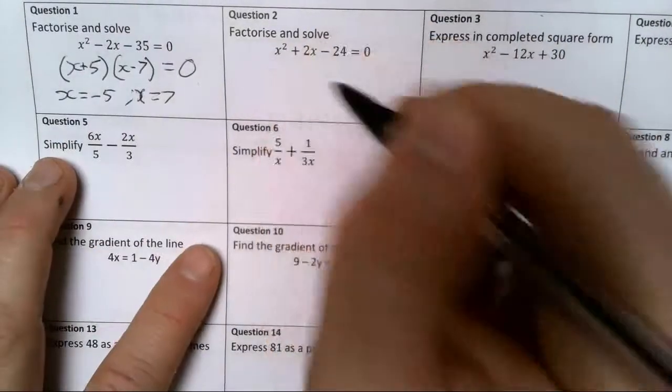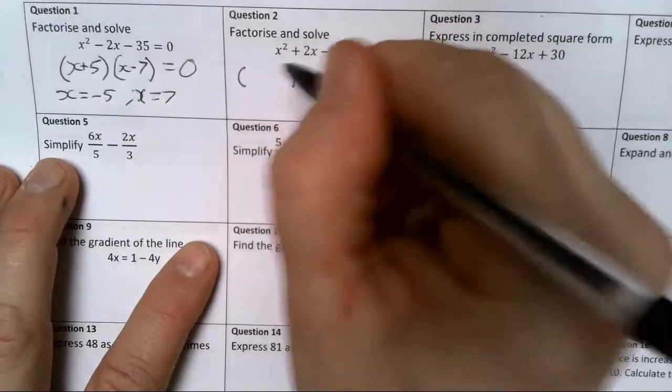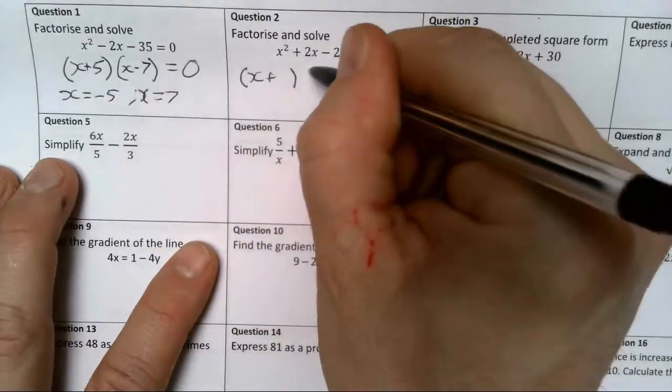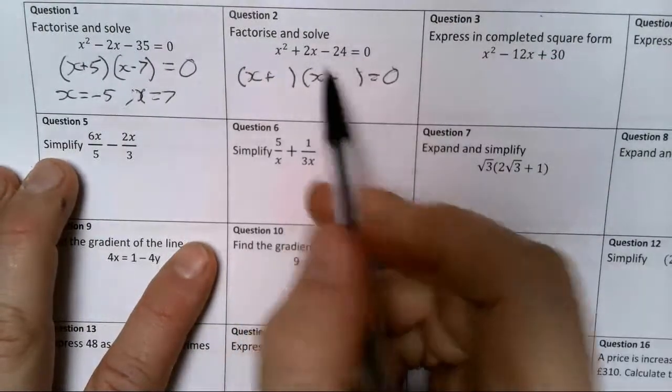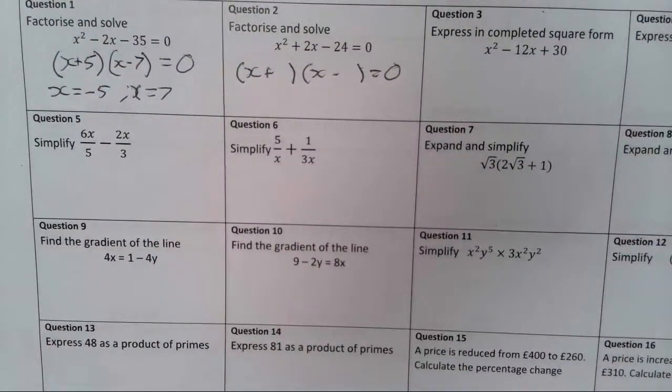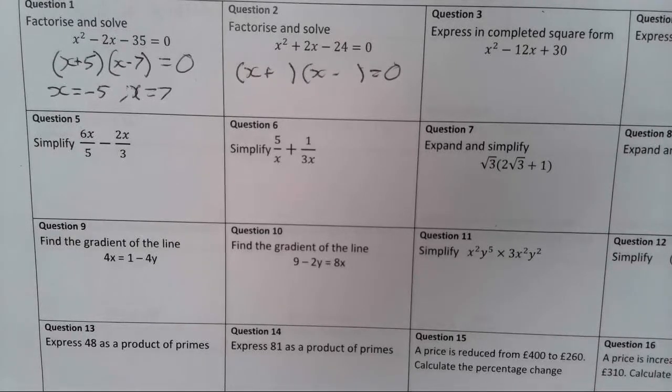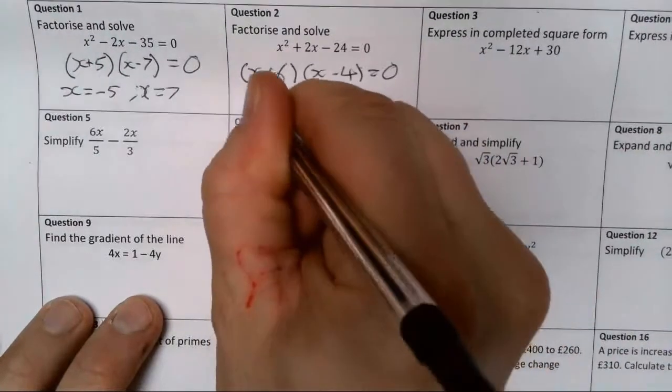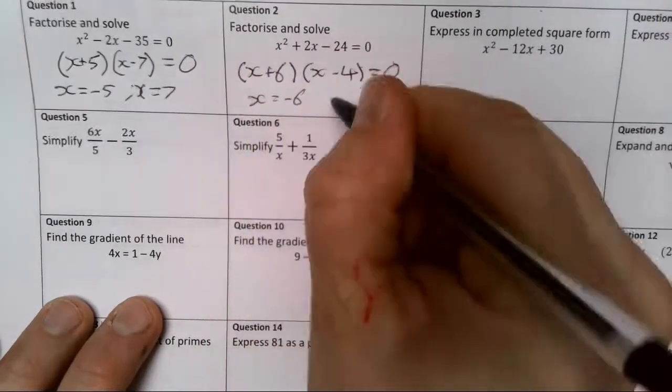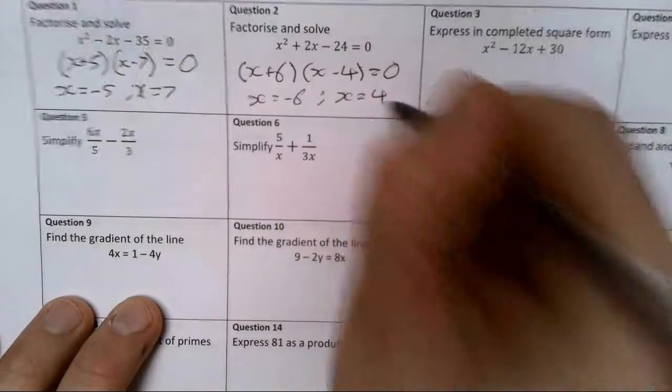Same thing here. I'm going to need to have x plus and x minus to generate this minus 24. I'm thinking about factors of 24, so I'm just going through them in my head. I'm thinking about 12 and 2, clearly not. I'm thinking about 8 and 3, clearly not. 6 and 4, that's the winner, so plus 6 and minus 4. So x equals minus 6, and x equals 4.